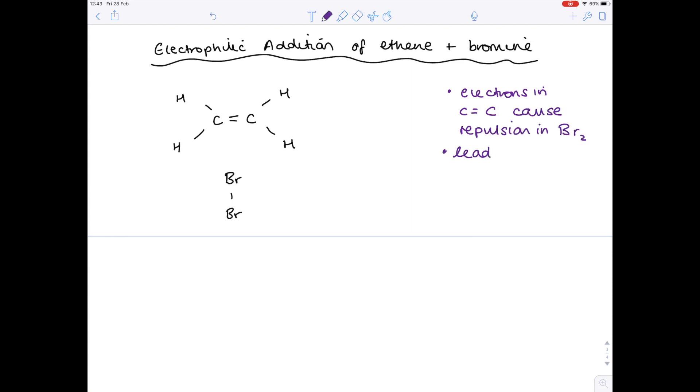The first thing to be aware of is that the electrons in this C double bond C, I'm just giving you some background, you don't need to learn this for your exam, but I want you to understand why the mechanism exists as it does. The electrons in that C double bond C cause a repulsion in the bromine molecule, and that leads to an induced dipole in the bromine molecule, meaning that part of that bromine molecule becomes delta positive, and part of it becomes delta negative.